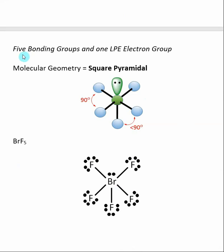With six groups of electrons where five are bonding and one is a lone pair, the molecular geometry is called square pyramidal. One bond has been replaced by a lone pair — it's called square pyramidal because the four central bonds form a square in the same plane, and the top point forms a four-sided pyramid. An example is bromine pentafluoride, where the central bromine has five bonding groups and one lone pair. The bond angle between adjacent central atoms is virtually 90 degrees, but the bond angle between a central atom and the bottom axial atom is compressed slightly less than 90 degrees due to the lone pair electrons.